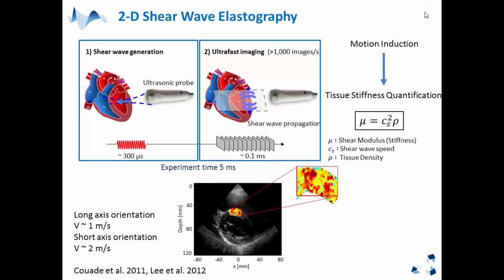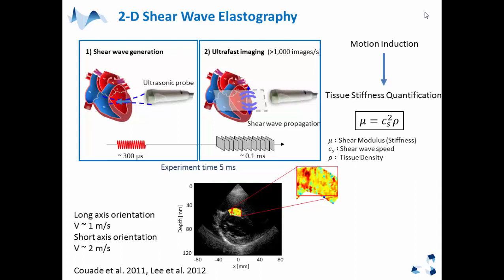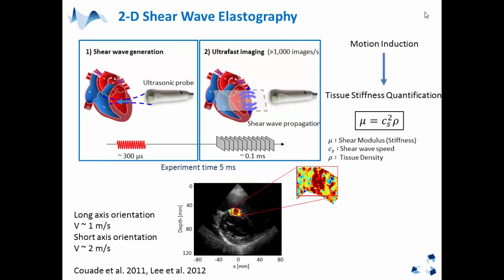As you all know, 2D shear wave elastography has been used to characterize elastic properties. It is based on the creation of a push beam by acoustic radiation force that generates shear waves. By switching to an ultrafast imaging mode, we are capable of tracking this shear wave propagation. If we are capable of calculating the shear wave velocity, we can determine the shear modulus, which is directly related to the Young's modulus, giving us the stiffness or elasticity of the tissue.